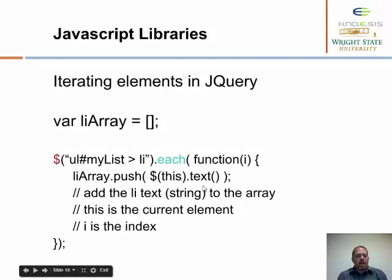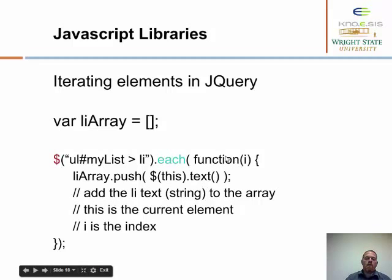In JavaScript we can iterate over elements on the DOM. Here we're looking at an unordered list called 'my list' and we're going to look at each of the list items. We have an array declared here, instantiated as empty. We're going to use 'push' to push the text of each list item into it. As we go through, each one will become 'this' and we get its text and push that into the list item array. The function is passed 'i', which is the index — we didn't use it in this example but we will later.